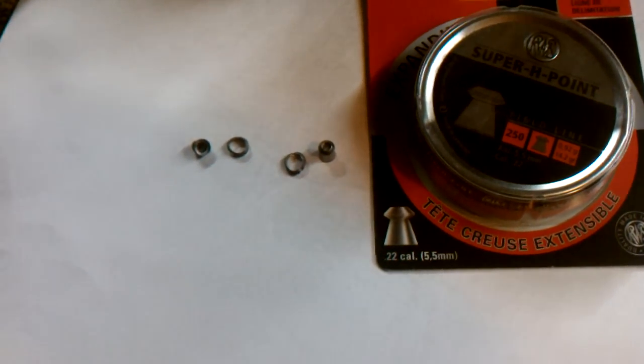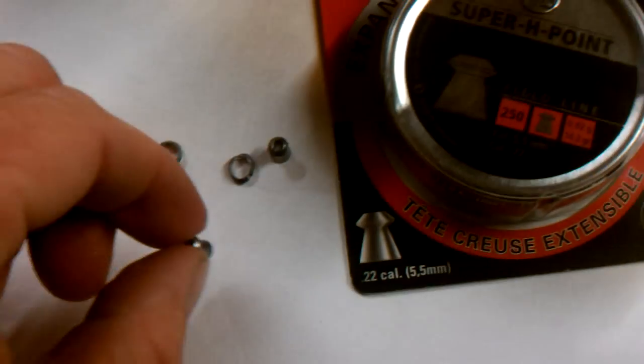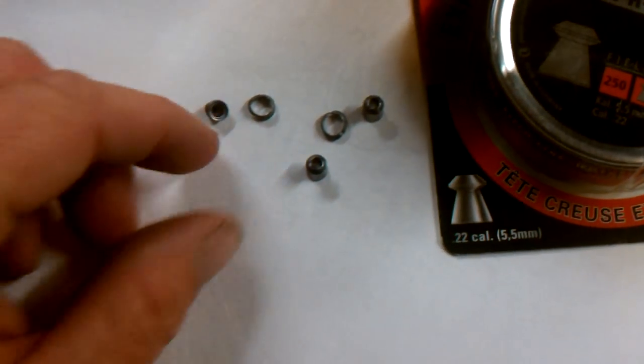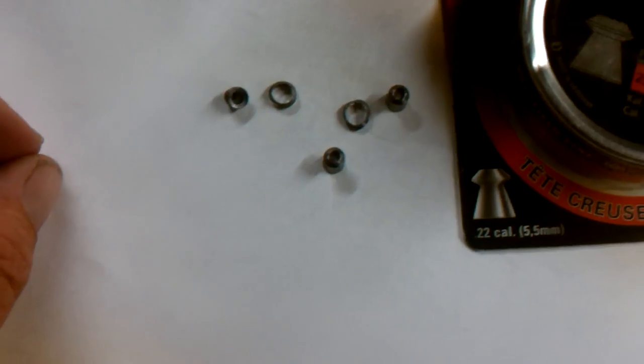.22 caliber hollow point pellets. Basically showing you a regular pellet, I'll put one down here. You see the diameter of it when it's standing up right now. When these pellets hit, they've got that little hollow point.